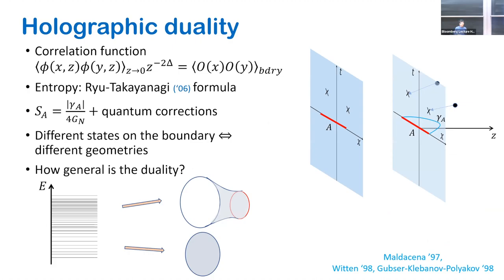The key motivating question is: how general is this duality? When we think about a many-body system where different states have different geometries — different semi-classical geometries — how general are these pictures? Are they specific to some areas with supersymmetry, or is it a more general phenomenon in quantum many-body physics? That's what I hope to see: what part of the duality between quantum many-body systems and quantum gravity can be generalized to generic quantum many-body systems.